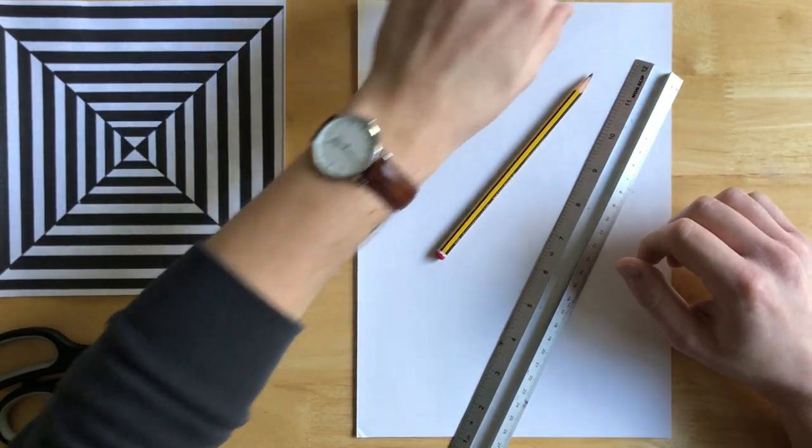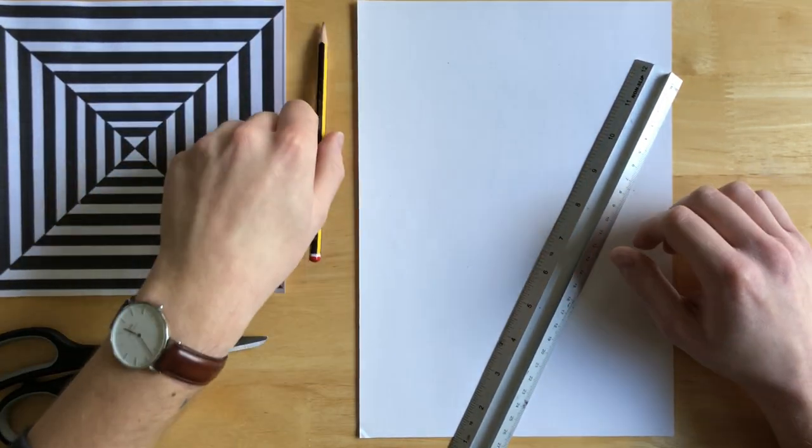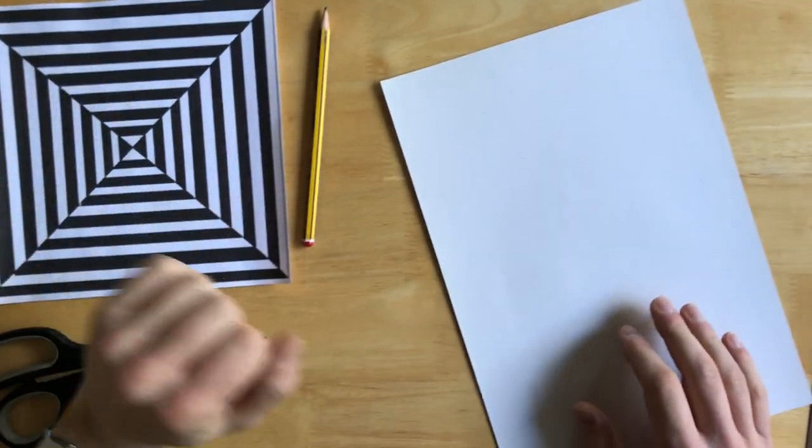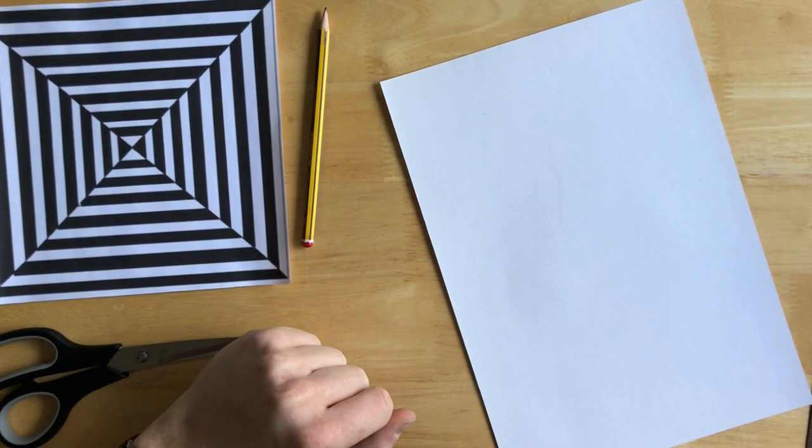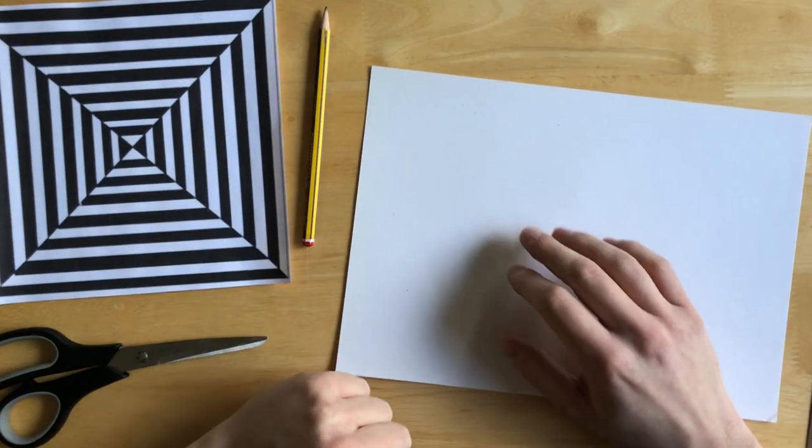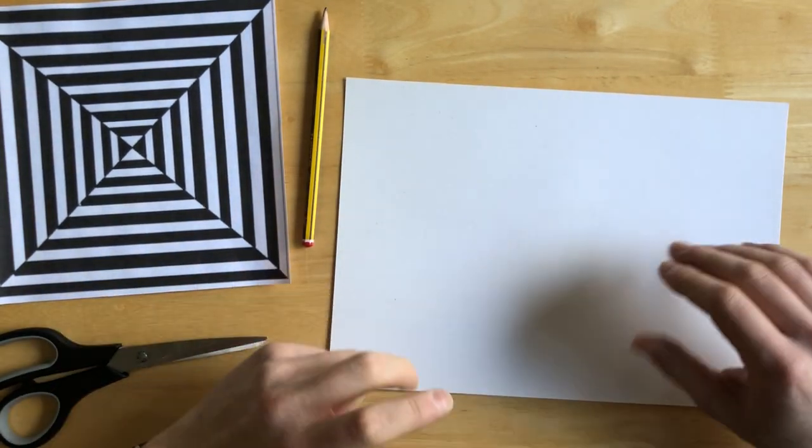But for today we're going to start by completing a drawing. So we're going to draw something a bit like this, we're going to draw the pattern out today and the next lesson we'll apply the colours to create the illusion.